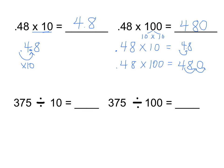Down below I have a couple of division problems. I'm starting with 375 divided by 10, and then 375 divided by 100. Let's start with 375 divided by 10. I know that when I divide by 10, I am moving my decimal place to the left once. So if I look at 375, the decimal place is to the right of the 5, and every time I divide by 10, I'm moving my decimal place one spot to the left. I've moved my decimal point over, and my final answer is 37.5, or 37 and 5 tenths.